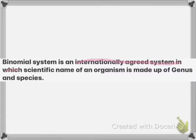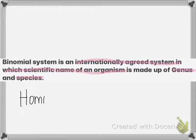In the binomial system, the genus name starts with a capital letter and the remaining letters are lowercase — for example, Homo. The species name is written in lowercase and in italics — for example, sapiens, giving Homo sapiens.